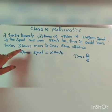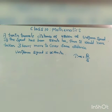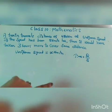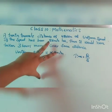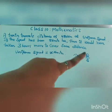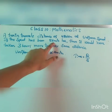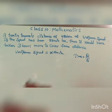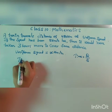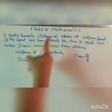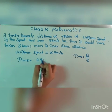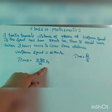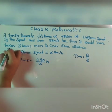Now we have to find out the time. The distance given is 480 km at a uniform speed x. So for the first case, time is equals to 480 divided by x hours.